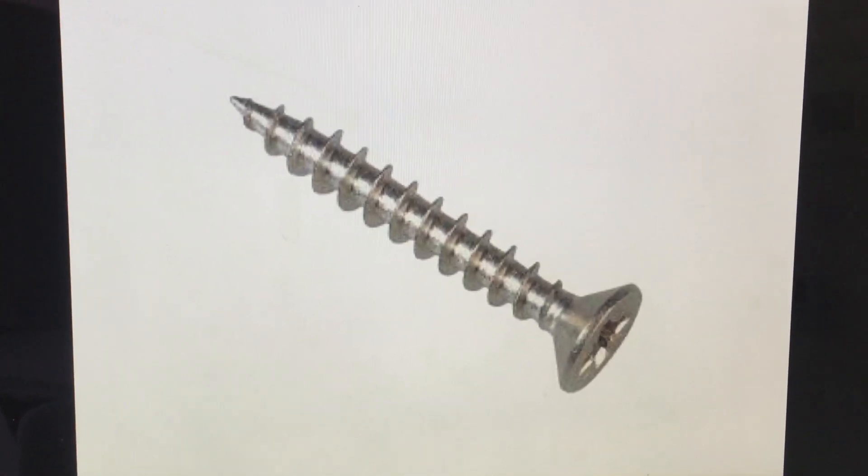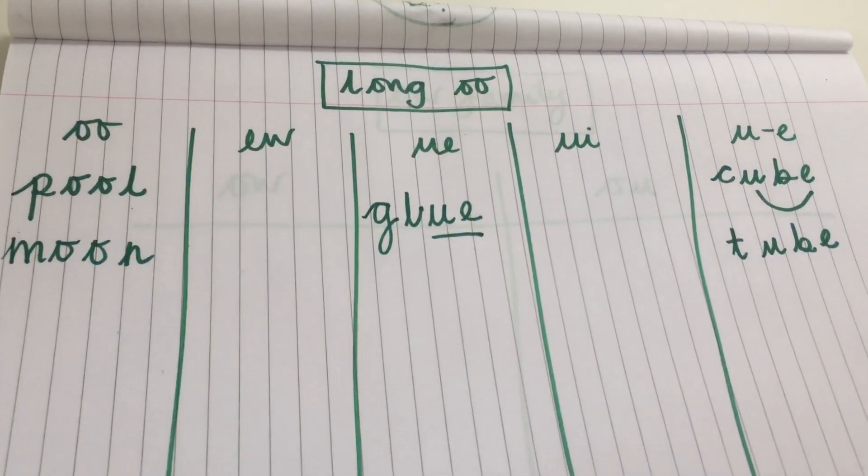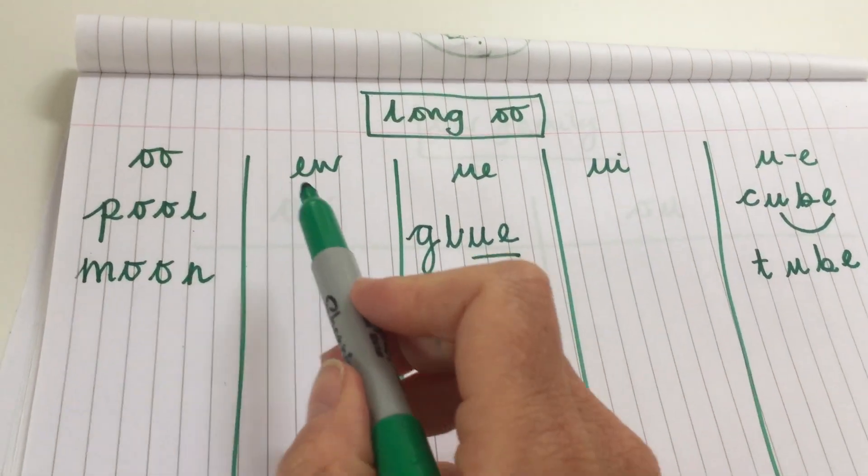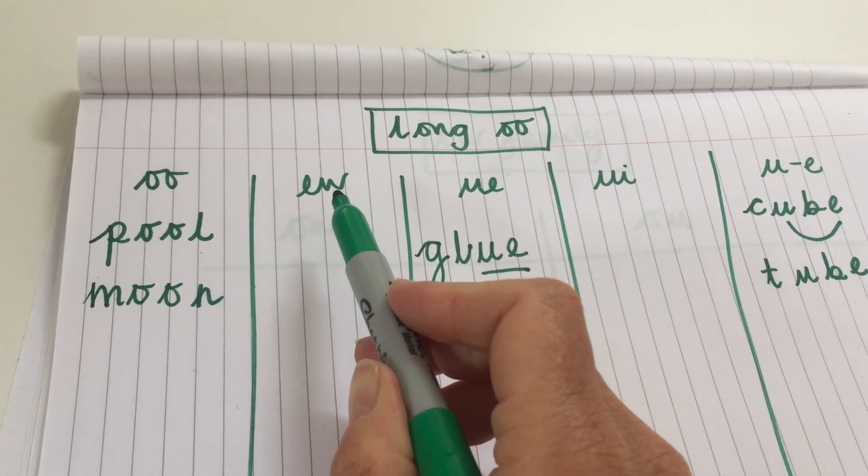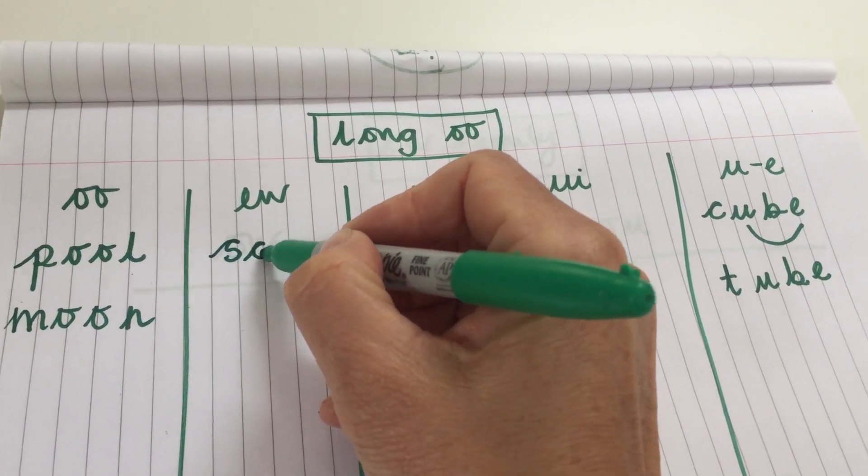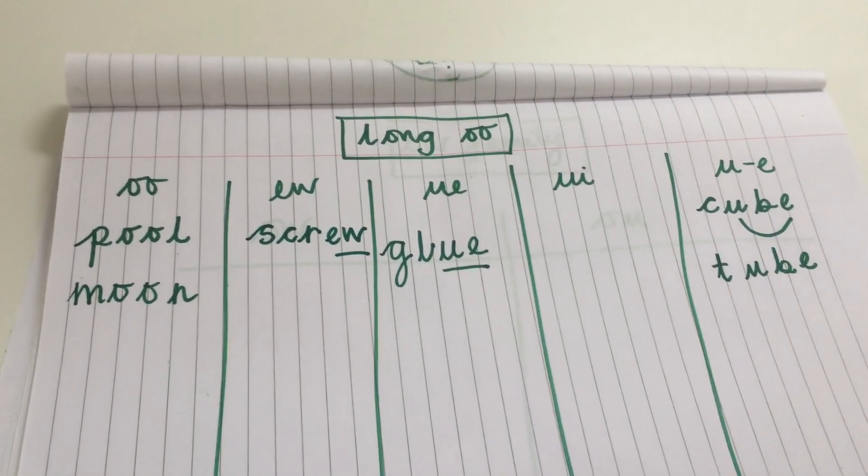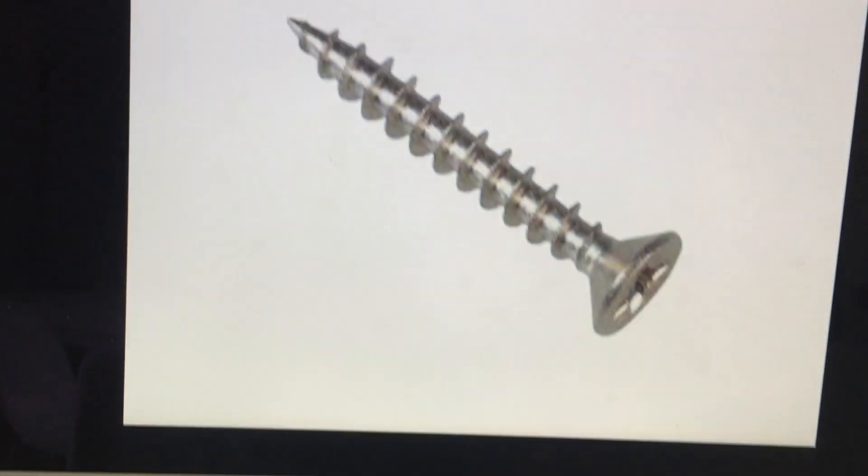Next picture is a picture of a screw. If you were screwing two things together. Let's have a look now. A screw. The oo sound in screw is using the E, W digraph. So let's add that one on. S, C, R, oo. Screw. Fantastic.